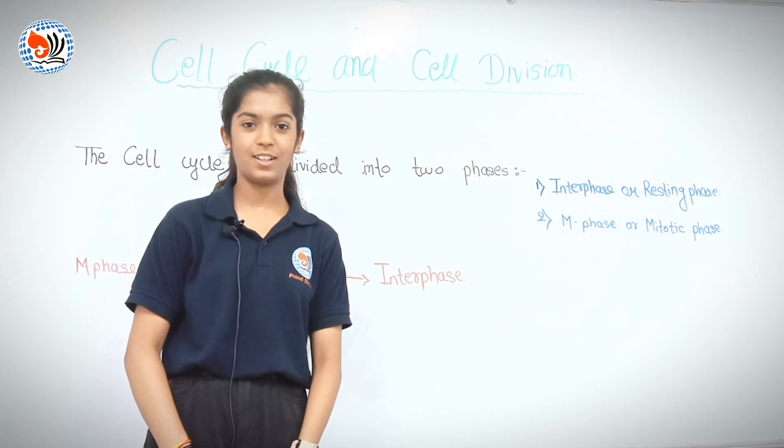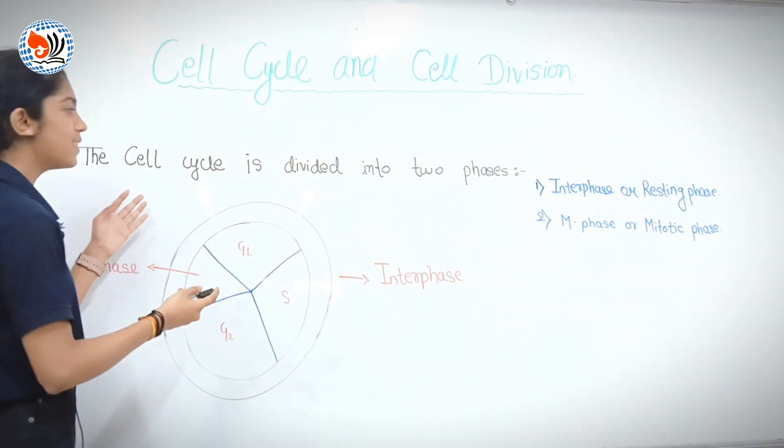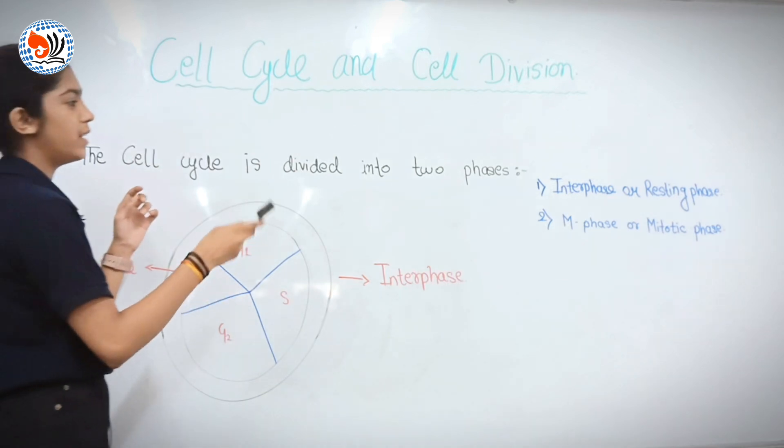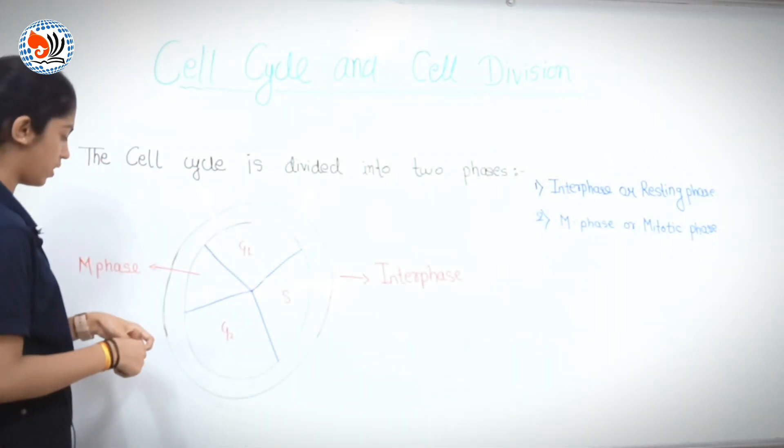Now we learn what actually a cell cycle is. Cell cycle is divided into two phases. Interphase or resting phase, and second one is M phase or mitotic phase.